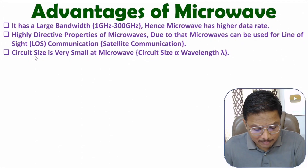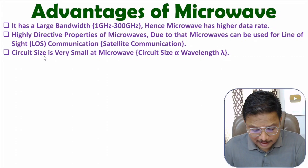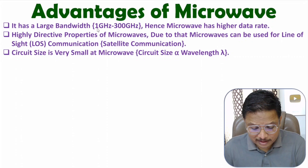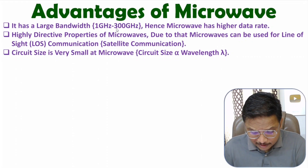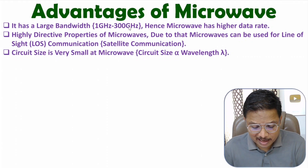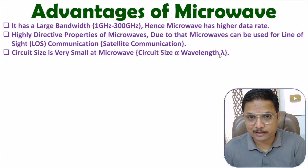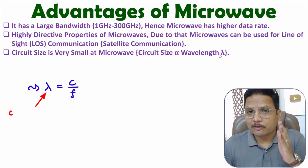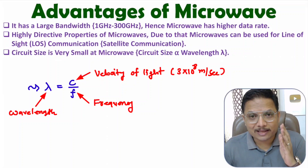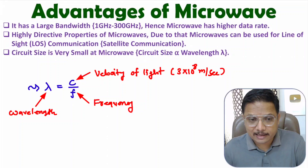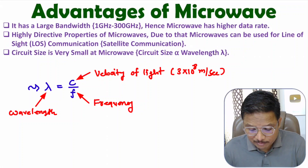The next advantage is based on circuit size. With microwave, circuit size is very small. The reason is that the size of the circuit depends on wavelength. Microwave has a frequency range of 1 GHz to 300 GHz, which gives a shorter wavelength, resulting in a smaller circuit size. As we know, wavelength λ = c / f, where c is the velocity of light and f is frequency. Since frequency is in gigahertz, the wavelength is very short, so circuit size is very small.